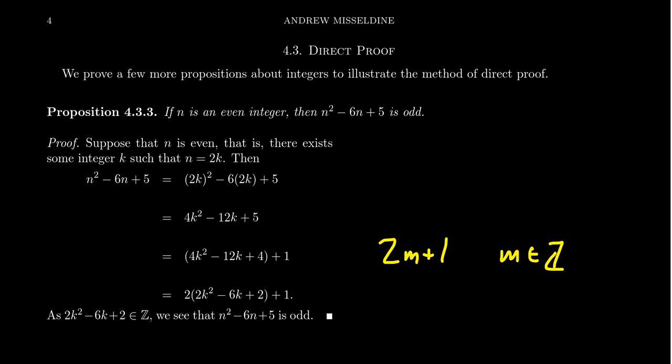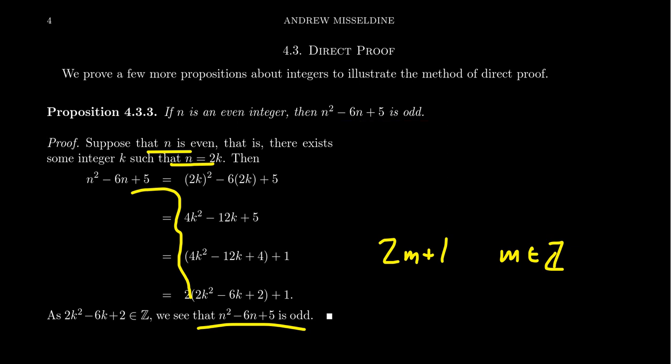This proves our proposition by the method of direct proof. In summary: we start with our assumptions, we unravel definitions, we bridge the gap, and then we finish by proving the conclusion of the conditional.